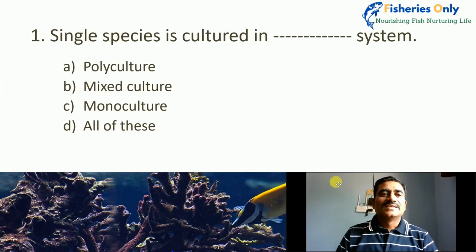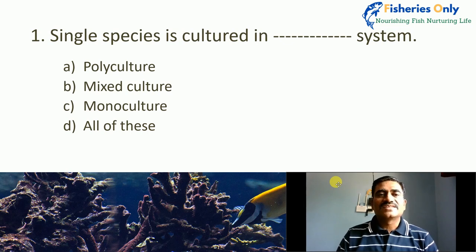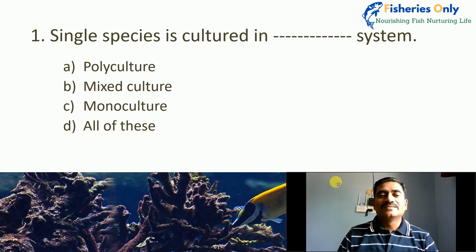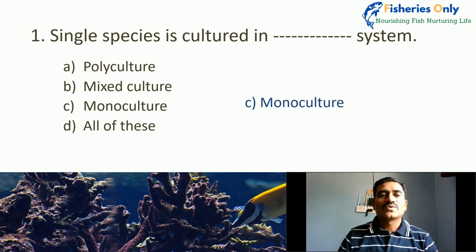First MCQ: Single species culture in a culture system — Freshwater Fish Culture or any aquaculture system — where only a single species is cultured, that culture is called as: polyculture, mix culture, monoculture, or all of these. Single means mono, so the right answer is C — monoculture.